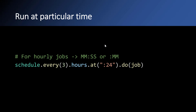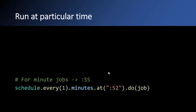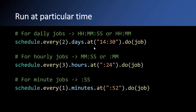This is useful in many practical scenarios because you have control over when the schedule triggers. Similarly, if you have an hourly job and want to trigger at the 15th minute, you can write schedule.every(1).hour.at(':15'). If you want to specify seconds too, like 15 minutes and 22 seconds, you can write '15:22'. For every-minute jobs, you can even specify which second to trigger — for example, schedule.every(1).minute.at(':52') to run at the 52nd second of every minute.